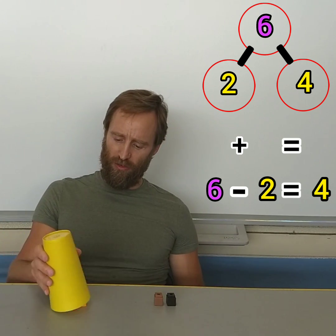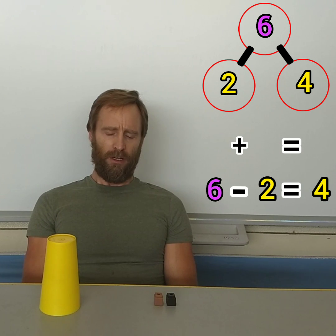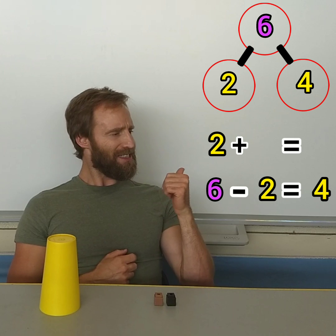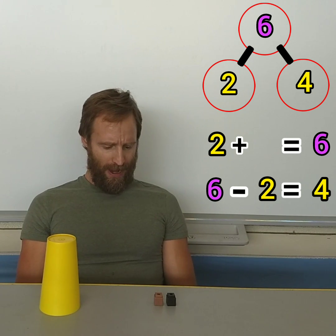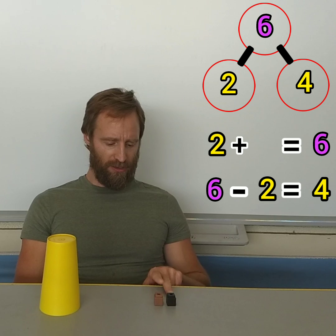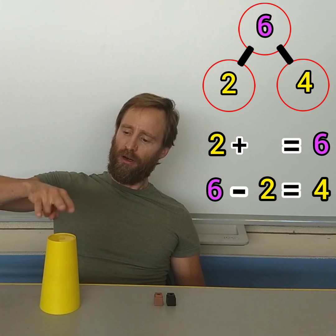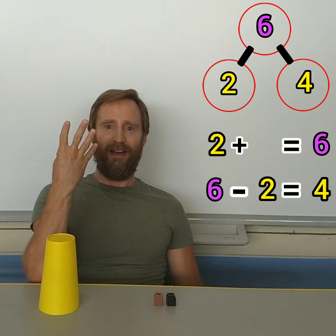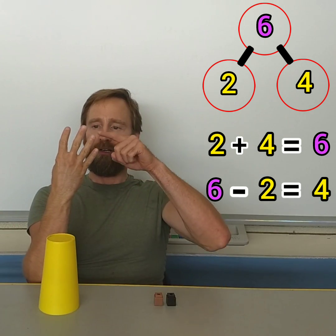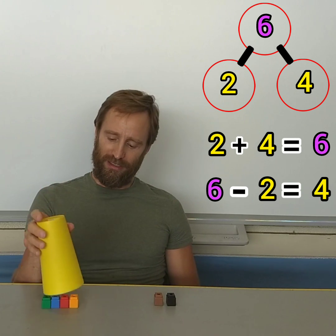What's another way to solve that? What about addition? Two plus something makes six. Let's see here. I think I can count up. I'll start on my two. One, two, three, four, five, six. I counted on four more. One, two, three, four. Plus two makes six.